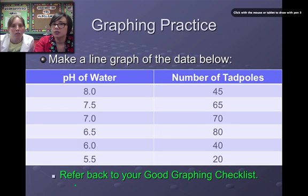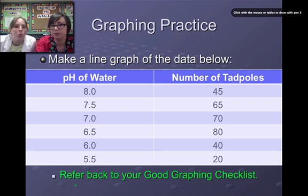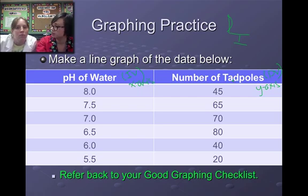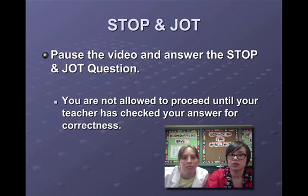Now we're to our first stop and jot. We're going to do some more graphing practice, and this time you guys are going to be on your own. We provided a data table with two columns, just like our previous one. What do we remember about a data table and what goes where? Usually my IV is over towards the left and my DV is over towards the right. So I'm going to draw one more time this picture. Here's my graph. I remember the bottom is the I, the side is the D. The IV goes on the X axis along the bottom, and the DV goes on the Y axis. When I make my graph, I'm going to put the pH of water along the bottom on the X axis, and I'm going to put number of tadpoles along the side on the Y axis. Those two titles on the top of each one of these columns becomes the title of each axis. Here's another stop and jot. Pause the video and answer the stop and jot questions. You can't proceed until you've had your teacher look over your answers and check to make sure that they're correct.